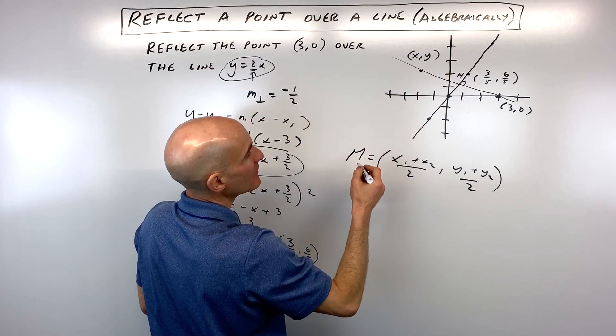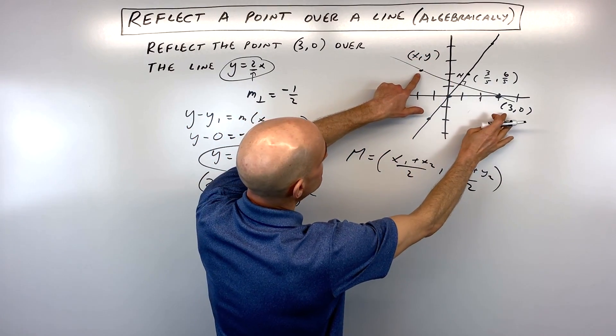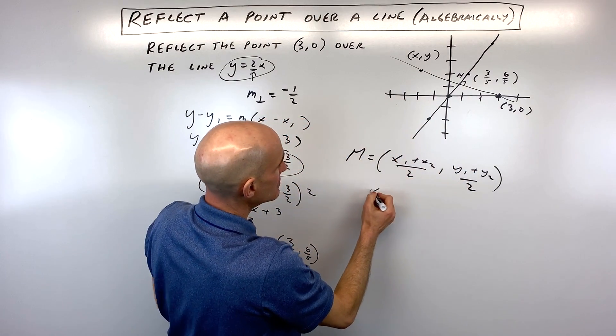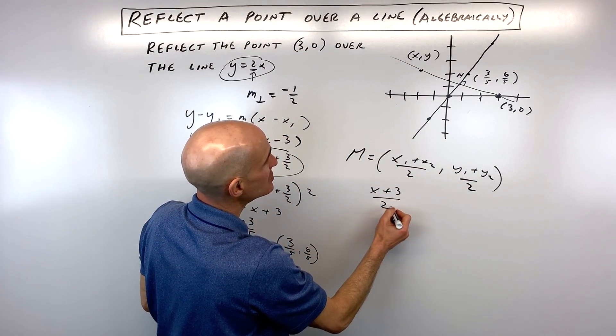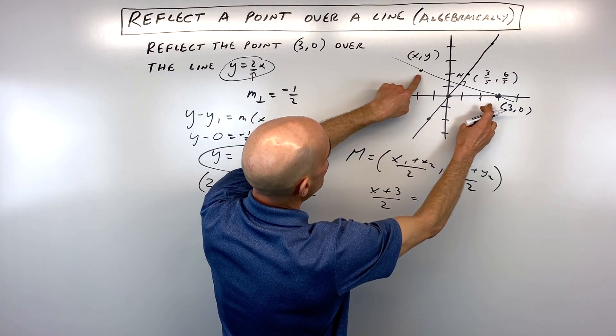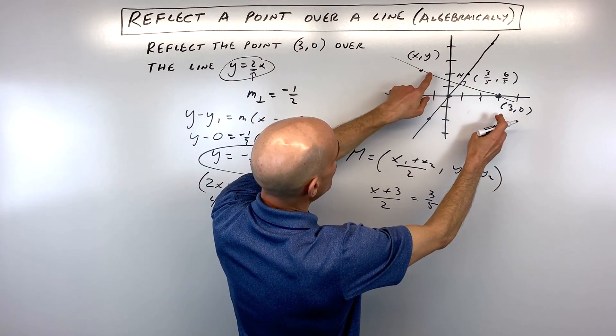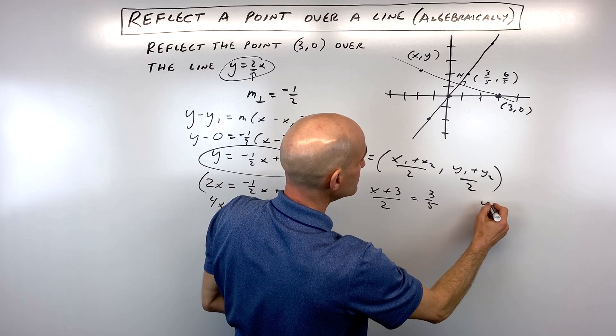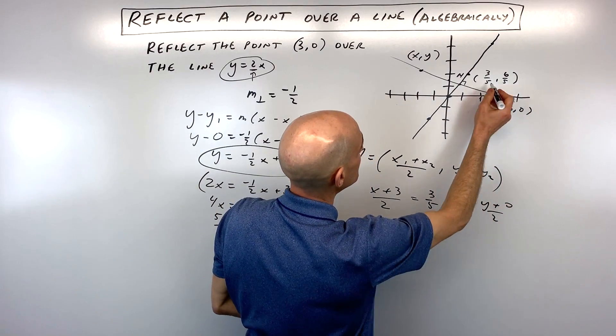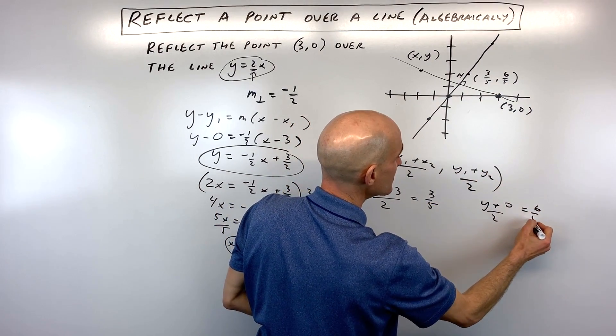The point is going to be somewhere over here. Let's just call this x, y. Now we're going to take these x coordinates, x and 3. So x plus 3 divided by 2. For finding the midpoint, that midpoint is going to equal 3 fifths. We're also going to do the same thing for the y's. So y plus 0 divided by 2 is going to give us the y coordinate, which is 6 fifths.